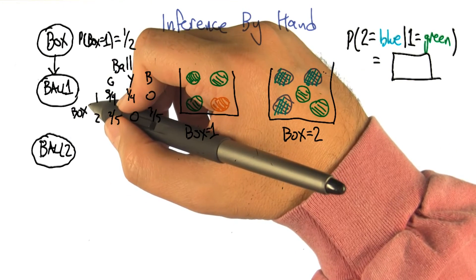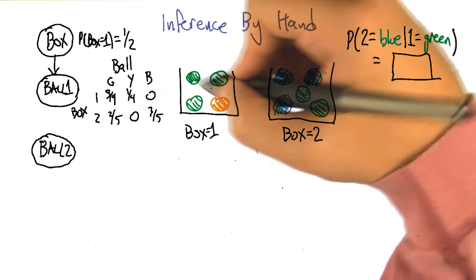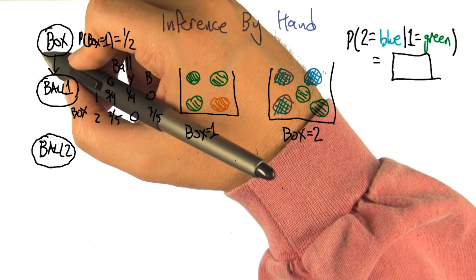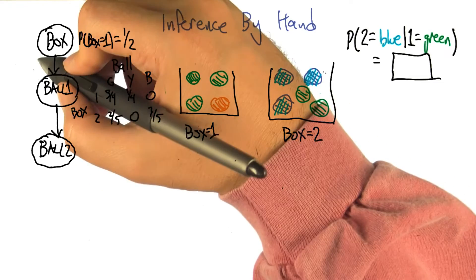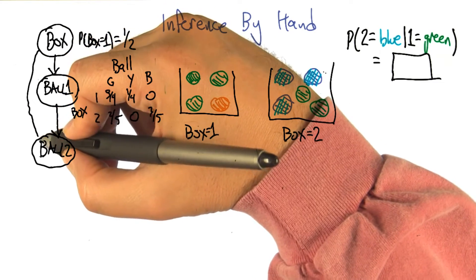Well, the value that ball two takes definitely depends upon whatever value ball one takes. Sure. But it also depends upon which box you're in. So you need an arrow from there as well.